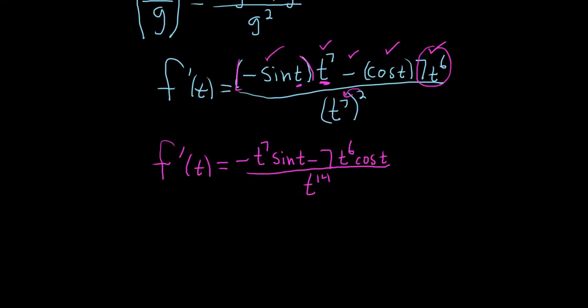Okay, looks like we can clean this up even more. We can factor out a t to the 6th in the numerator. So let's do that. So we have t to the 6th, parentheses, and then we're left with the negative t sine t, right, because t times t to the 6th is t to the 7th, which is what we have there, minus 7 cosine t. That's all divided by t to the 14th power.